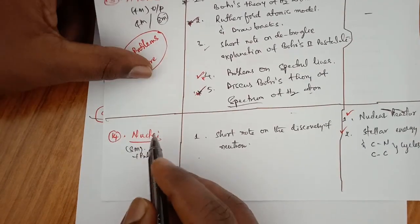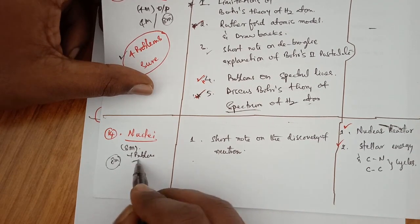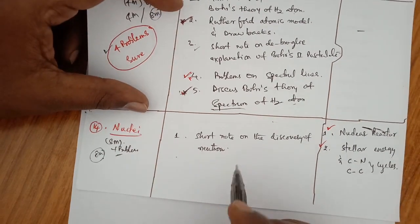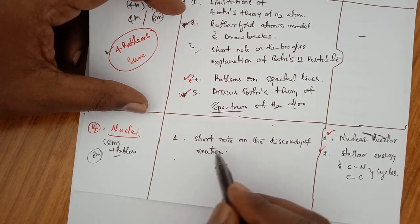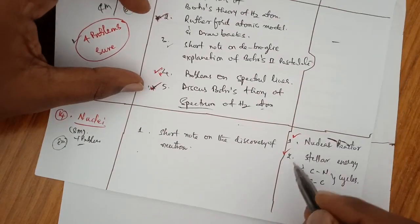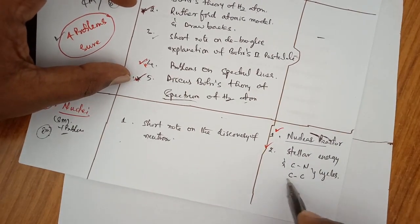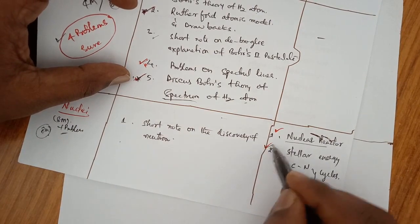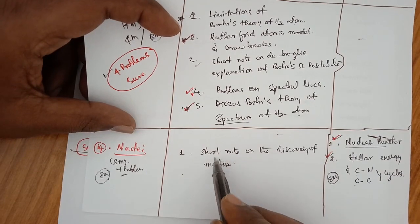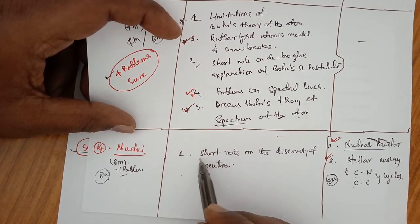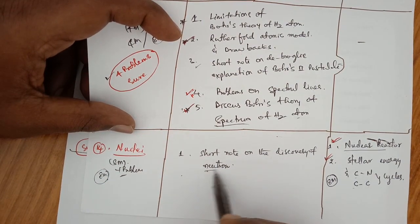Chapter 14 is Nuclei — made for 8 marks questions and some attached problems. We can expect questions on nuclear reactor and stellar energy. Carbon-nitrogen cycle and carbon-carbon cycle — these two questions are very, very important for 8 marks. For 4 marks: write a short note on the discovery of the neutron.